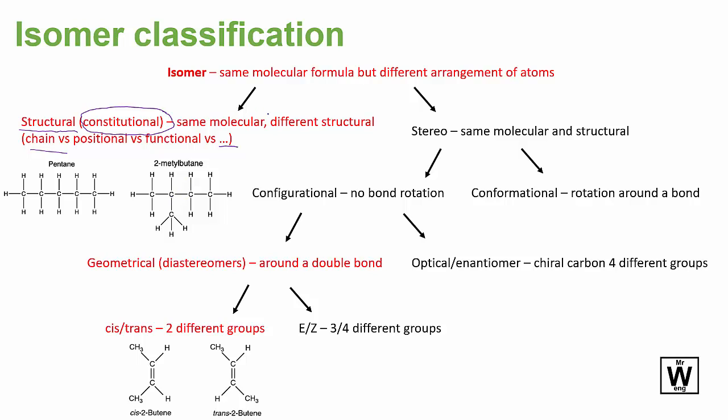So isomers have the same molecular formula but different arrangement of atoms. Now for structural, it's the same molecular formula, different structural formula. So the chain is a different thing here. If you see the word positional, it means there's a functional group that is maybe over here, ketone, and now it's moved over to here. So these two have swapped around so that the functional group is in a different position.